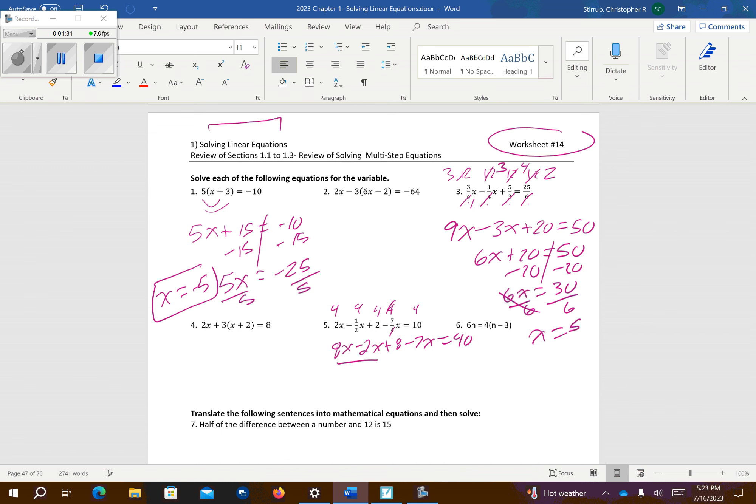And we're going to combine like terms. That's going to give me 6x minus 7x, which is going to give me negative x plus 8 equals 40. Go ahead and subtract 8 from both sides. So I'm going to get negative x equals 32. And then change the signs on both sides by multiplying each side by a negative.